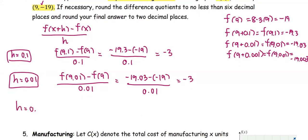when h = 0.001, the difference quotient is f(9.001) - f(9)